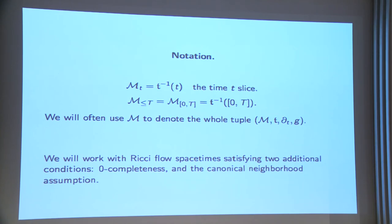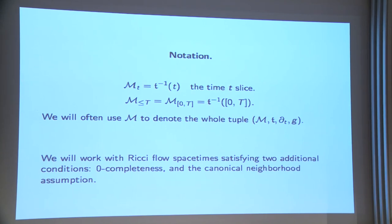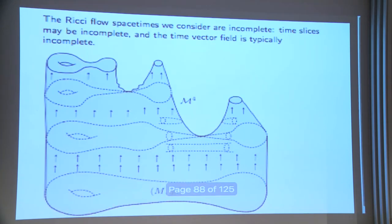Some notation: M_t will be the time-t slice; M_{≤T} is the time slab ranging between 0 and T; and I'll use calligraphic M to denote the whole spacetime — the way you denote a Riemannian manifold just by M. This notion of a Ricci flow spacetime is much too weak to actually do anything. We need to impose additional conditions: a completeness-type condition and a condition called the canonical neighborhood assumption.